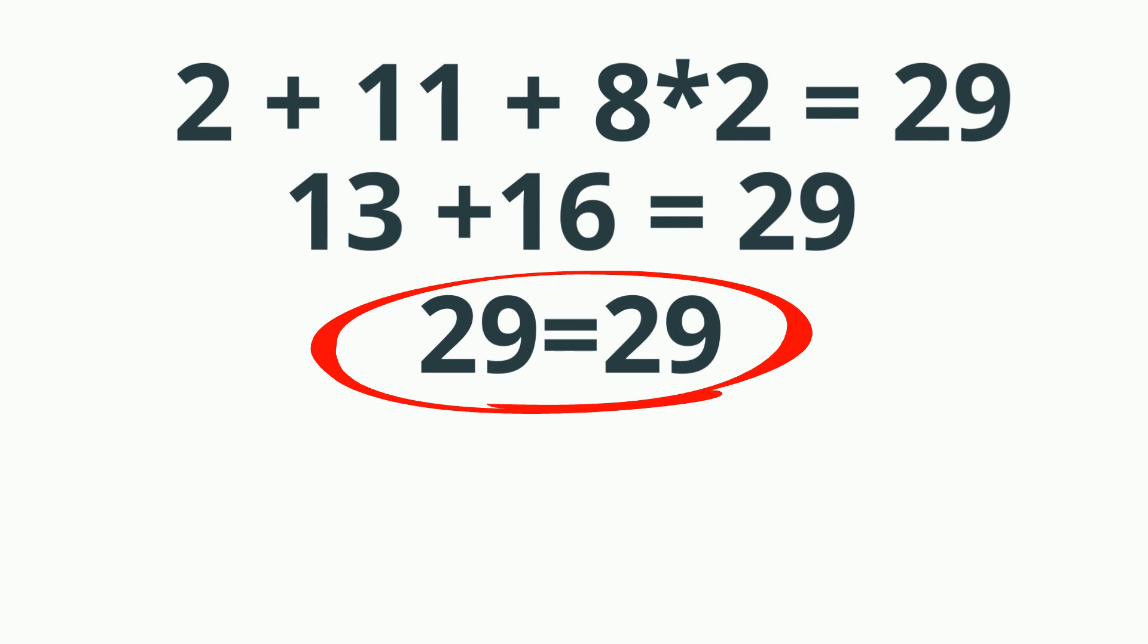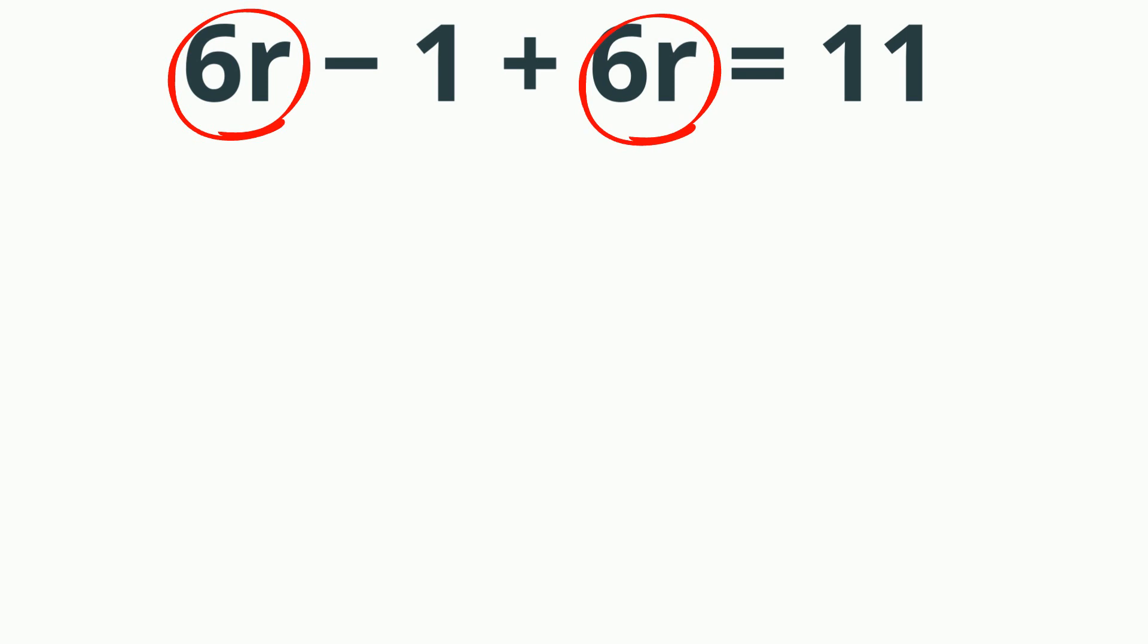Now I have 6r minus 1 plus 6r equals 11. Again, I'm going to start by combining like terms. 6r plus 6r is 12r. Bring everything else down.